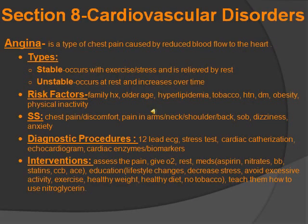Angina is a type of chest pain caused by reduced blood flow to the heart — ischemia. There are two types: stable and unstable. Stable occurs with exercise and stress and is relieved by rest — as soon as you stop exercising, it stops. Unstable occurs at rest, continues even without activity, and increases and gets worse over time.